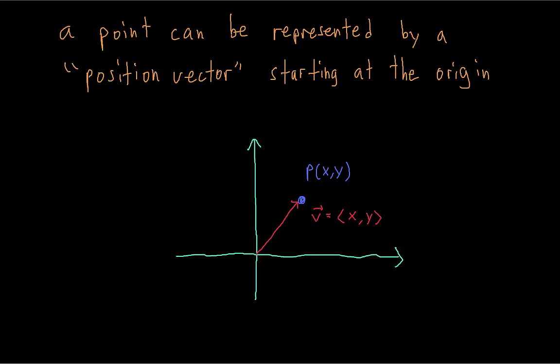You're going to see that sometimes, instead of referring to points, we refer to the position vectors. This further confuses the boundary between points and vectors. When we have vectors starting at the origin, we say that they are in standard position.